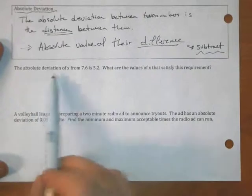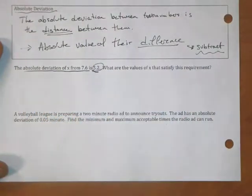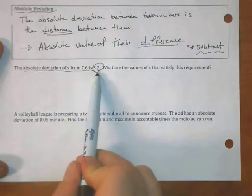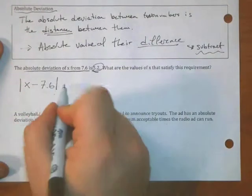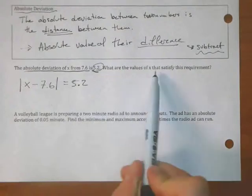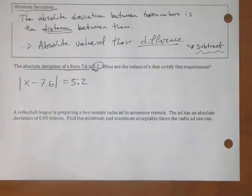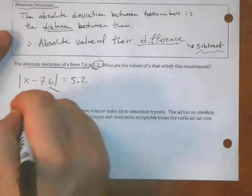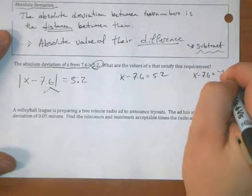So for example, if I say the absolute deviation of x from 7.6 is 5.2, or the absolute value of the difference of these two numbers is 5.2. Absolute value of x and 7.6, and I'll subtract them, is 5.2. This absolute deviation is telling us to set up this thing. What values of x satisfy this? What x's have an absolute deviation between 5, with 7.6 of 5.2? How do I figure out what those x's are? Let's solve it. So how do we solve this thing? Let's blend the two equations. x minus 7.6 equals 5.2, x minus 7.6 equals negative 5.2.